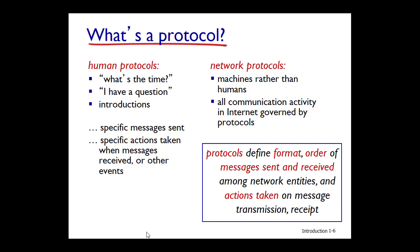All activity in the internet that involves two or more communicating remote entities is governed by one or more protocols. For example, hardware-implemented protocols in two physically connected computers control the flow of bits on the wire between the two network interface cards. Congestion control protocols in those end systems control the rate at which packets are transmitted between the sender and the receiver. Protocols in routers determine a packet's path from the source to the destination.